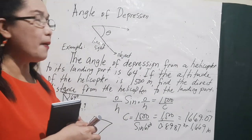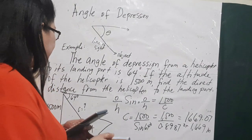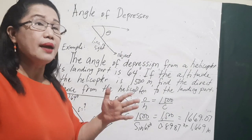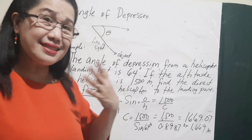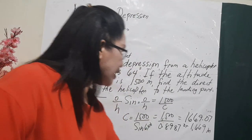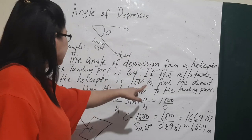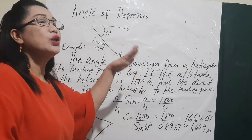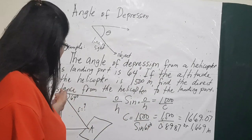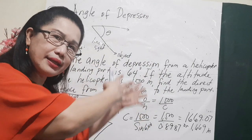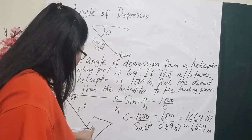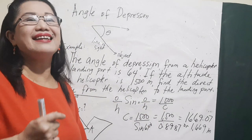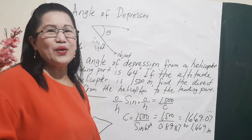Notice that the hypotenuse, 1,669 meters, is indeed larger than the altitude of 1,500 meters — which makes sense because the hypotenuse is always the longest side of a right triangle. So the direct distance from the helicopter going down to the landing port is 1,669 meters.